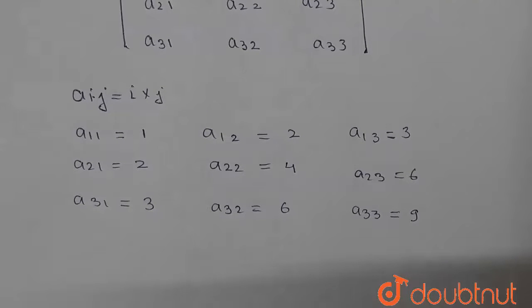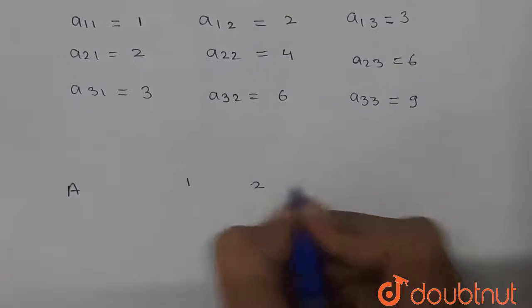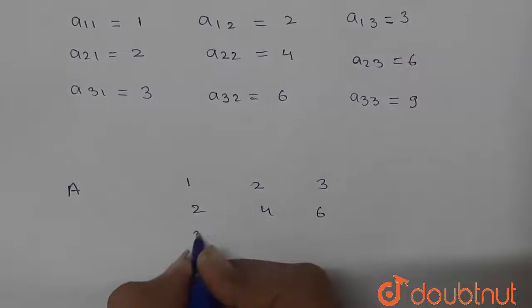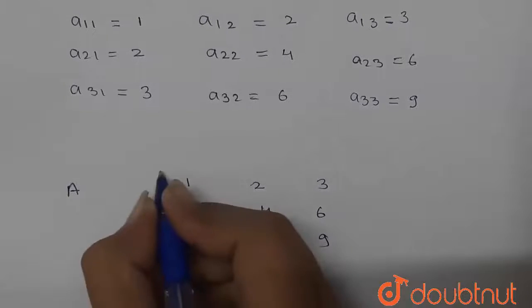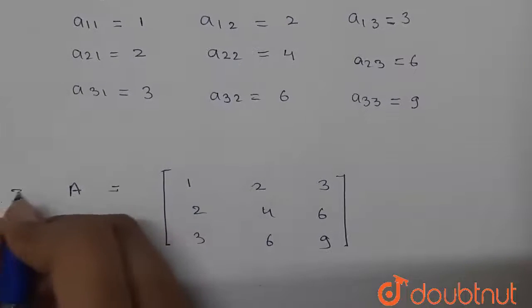Now let us put it in the A matrix. So our matrix will become, A matrix will be 1, 2, 3, 2, 4, 6, 3, 6, 9. So this is the required matrix. This is the required answer. Thank you.